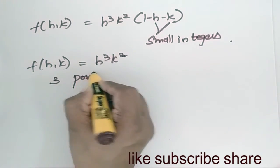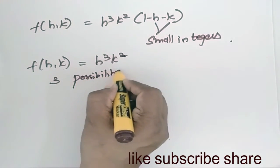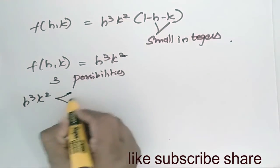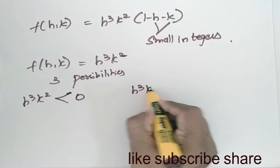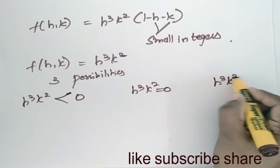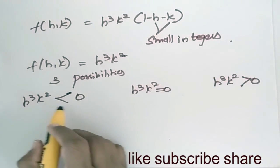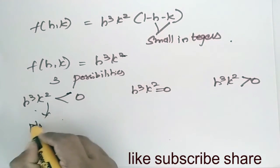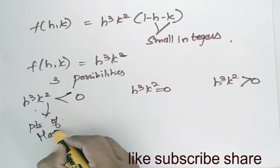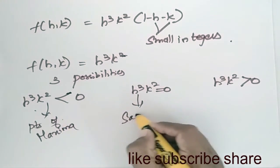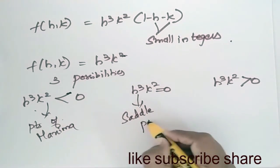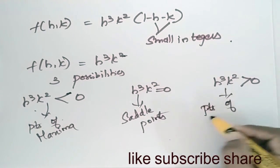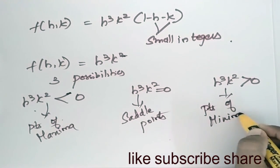We come across three possibilities for h³k²: when h³k² < 0, these are points of maximum; when h³k² = 0, these are saddle points; when h³k² > 0, these are points of minimum.